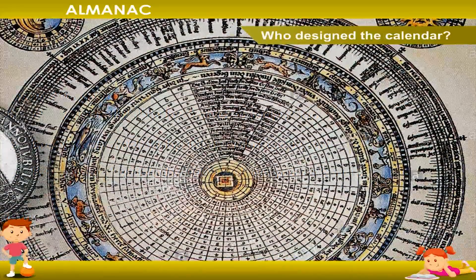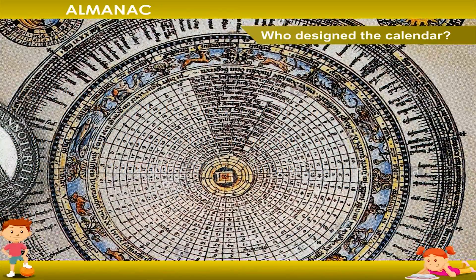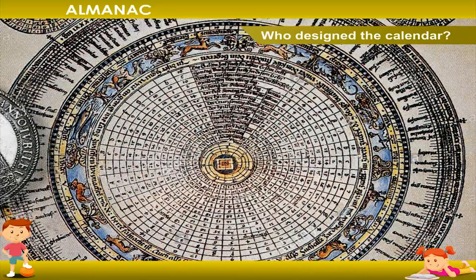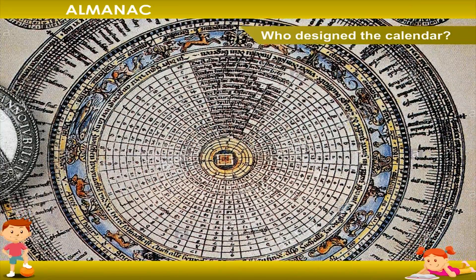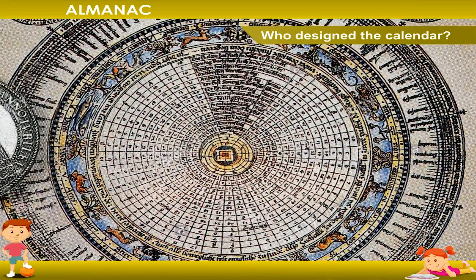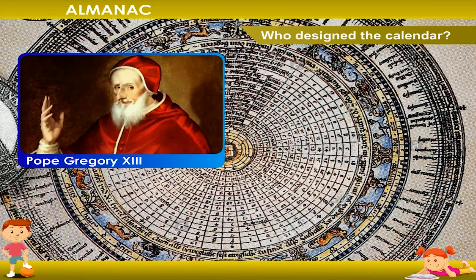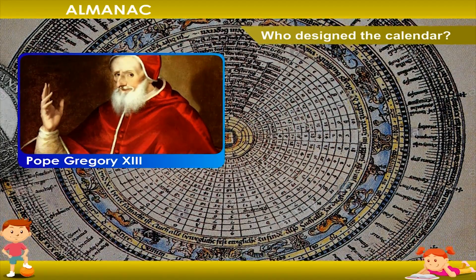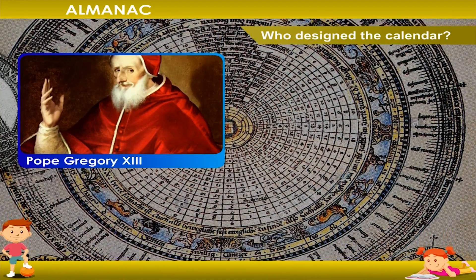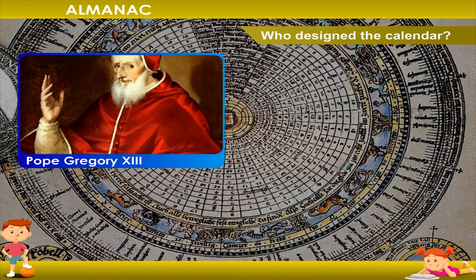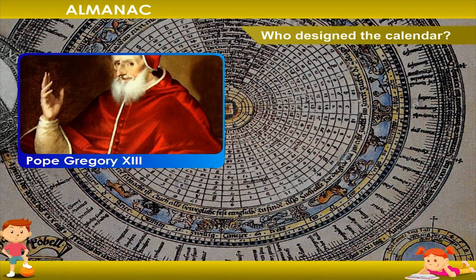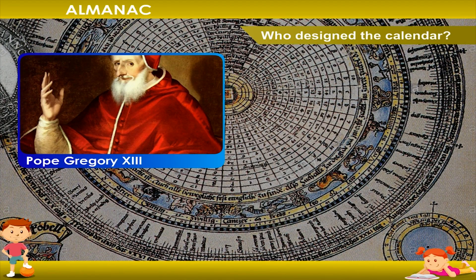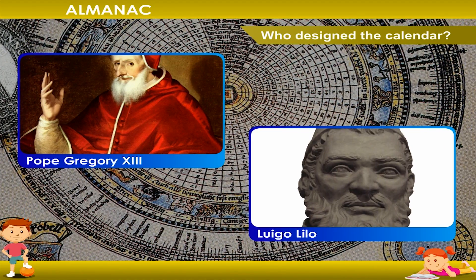Who designed the calendar? Although the Gregorian calendar is named after Pope Gregory XIII, it is an adaptation of a calendar designed by an Italian doctor, astronomer, and philosopher, Luigi Lilio.